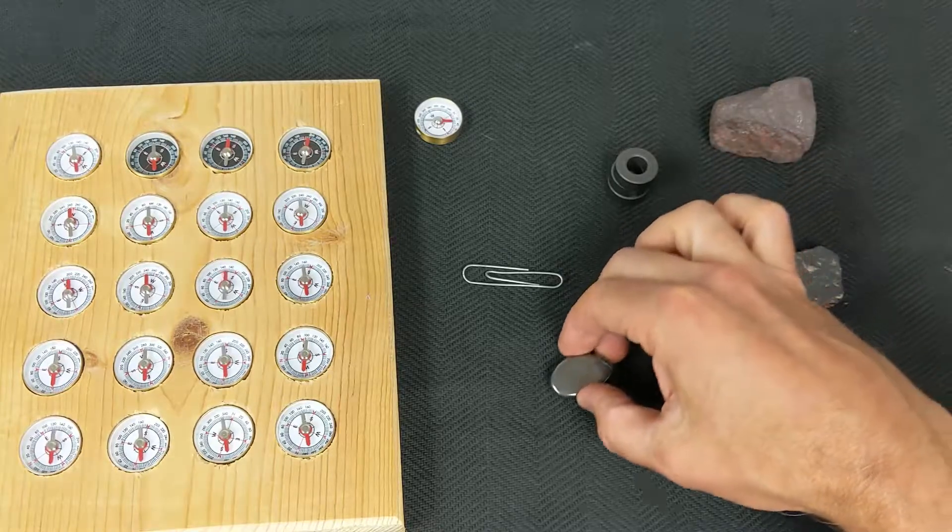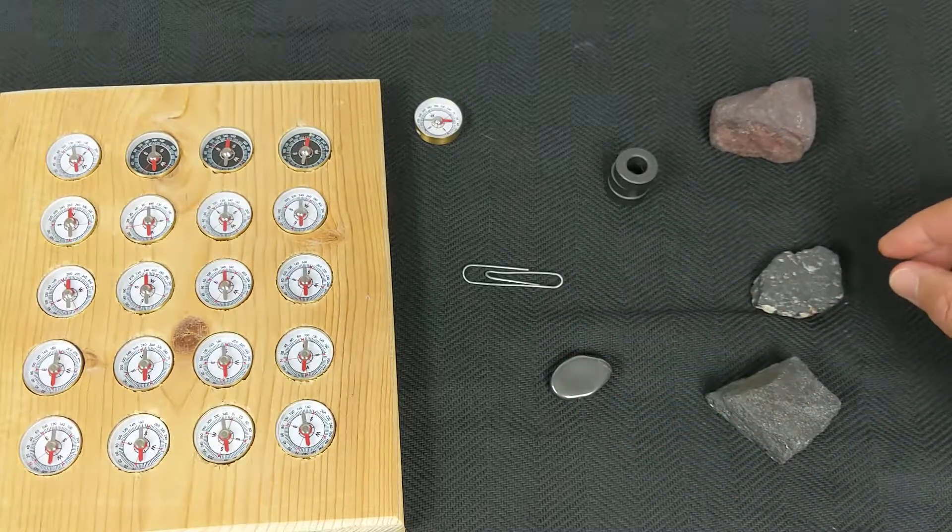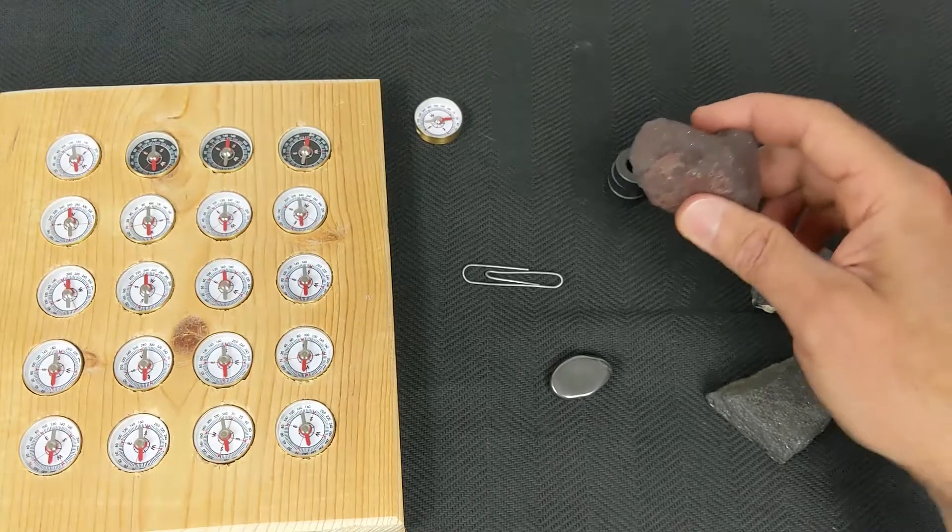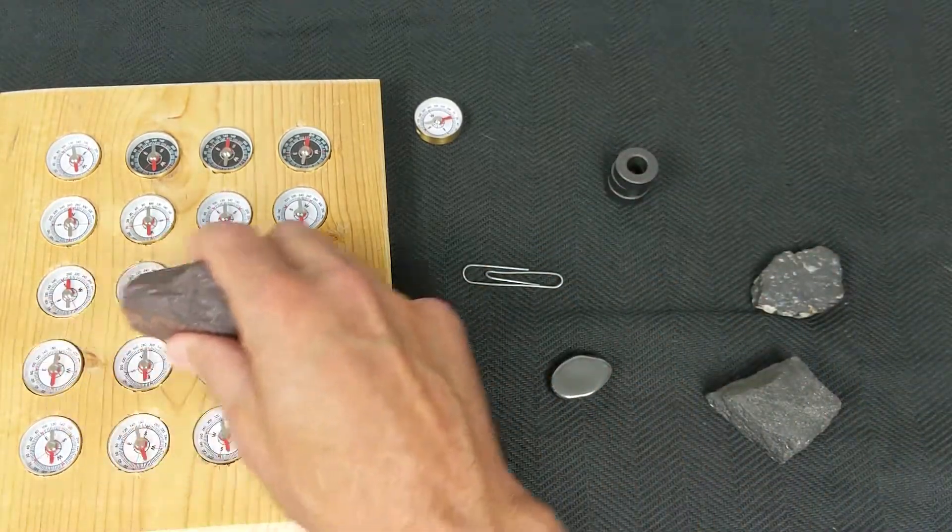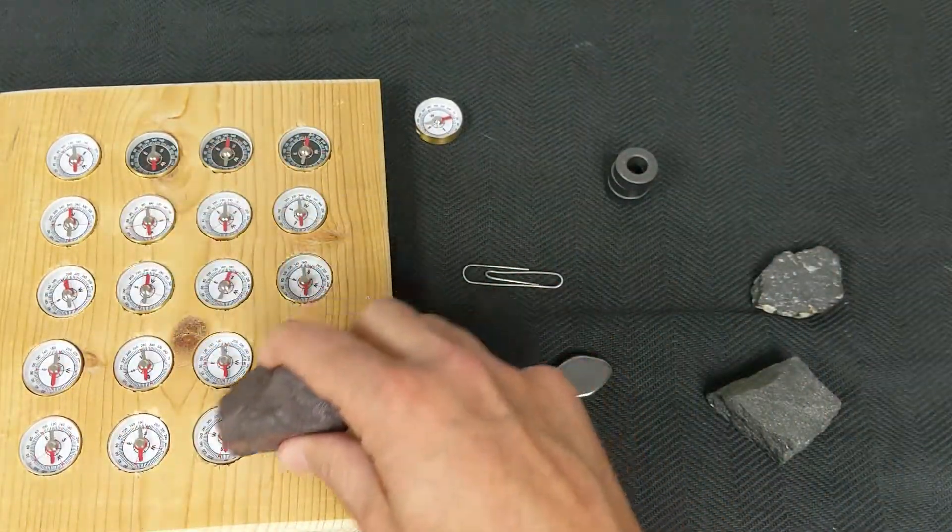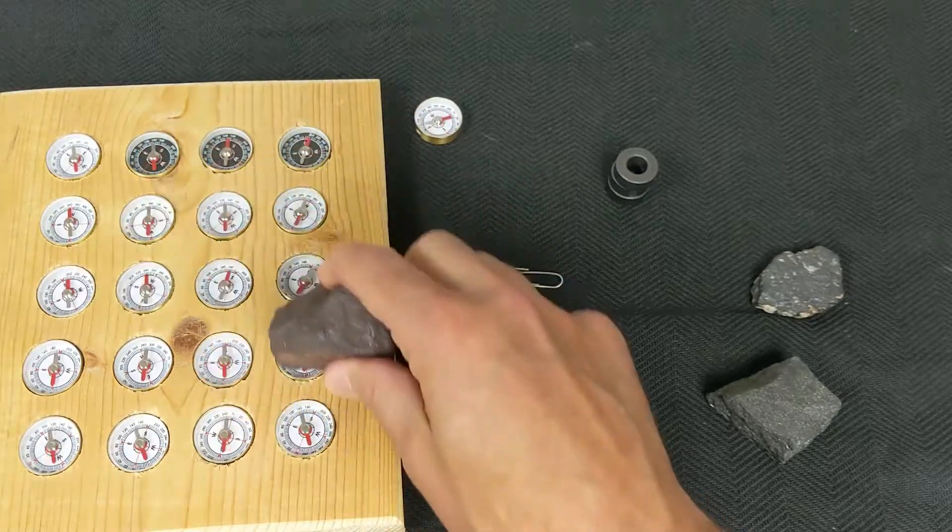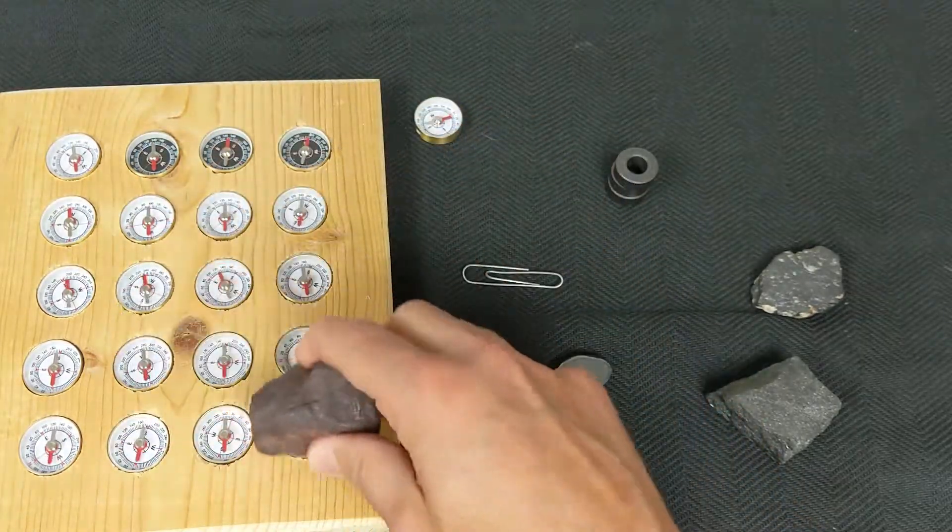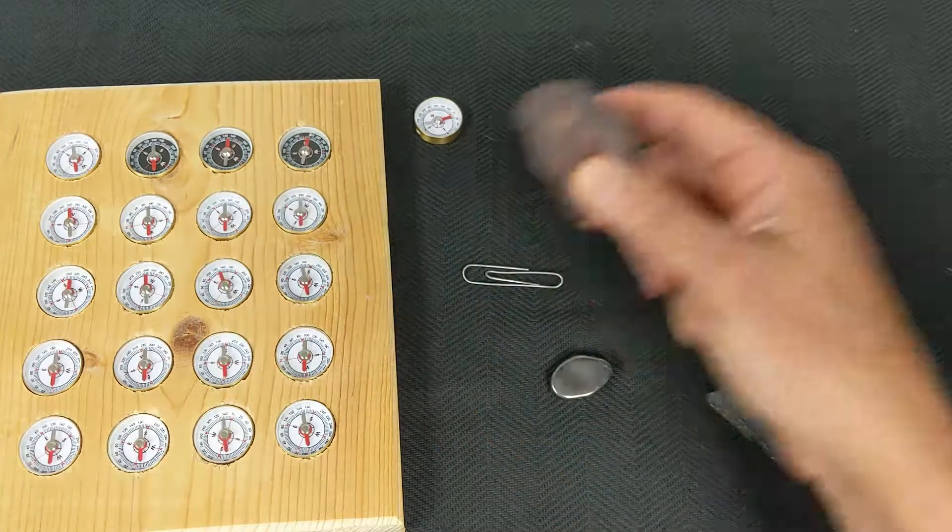So is there another way that I can determine whether or not these rocks are weakly magnetic? Well, if I pick this rock up and pass it over the array of compasses, you'll see that these compass needles begin to swing a little bit. That indicates there are weak magnetic properties to this mineral.